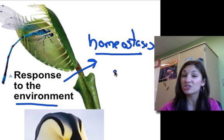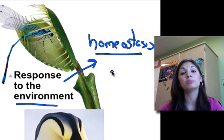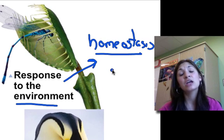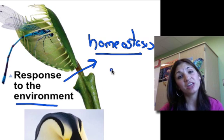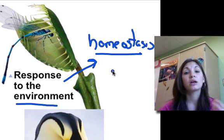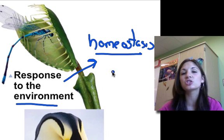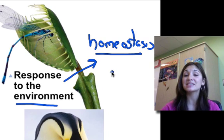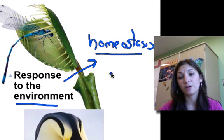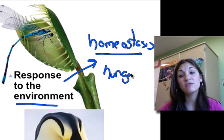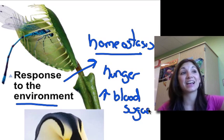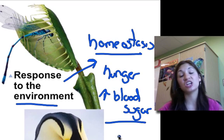Living things can also respond to internal stimuli such as hunger. If your blood sugar level rises, your body will secrete insulin — your pancreas produces insulin to bring those sugar levels back down, converting glucose to glycogen for storage, because high sugar levels can damage internal organs and disrupt homeostasis. That's an internal stimulus. Hunger, high blood sugar, even low blood sugar — these are internal stimuli. External stimuli are from the external environment: anything from a change in seasons to the amount of sunlight available during a day.